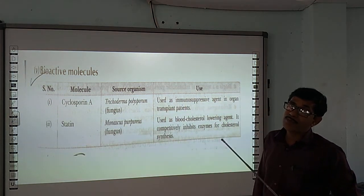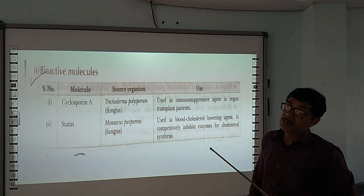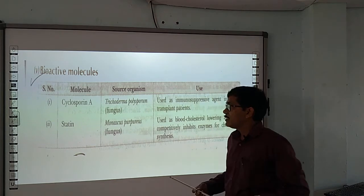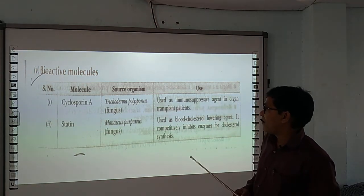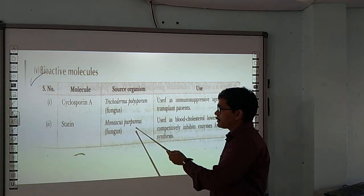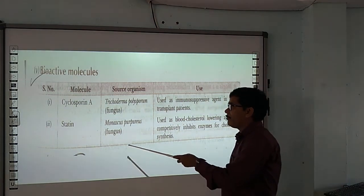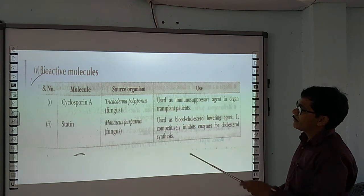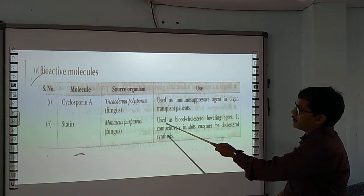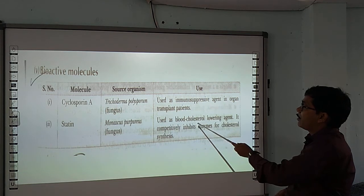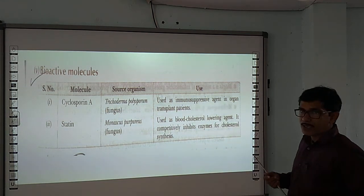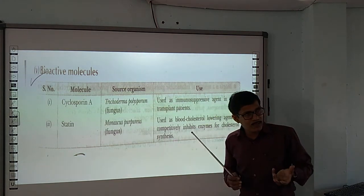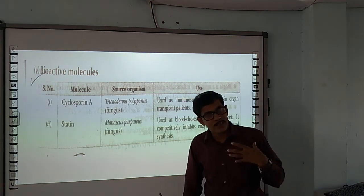Statins are obtained from Monascus purpureus, which is also a type of fungus. Statins are used as blood cholesterol-lowering agents. When cholesterol levels rise in the blood, it affects the heart. Statins help in lowering blood cholesterol, which keeps the heart working properly.